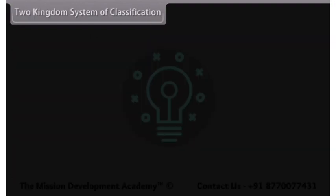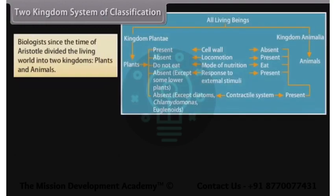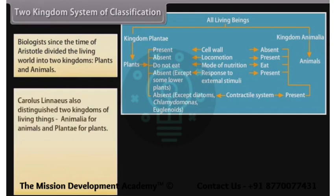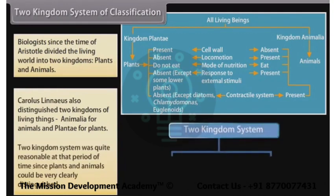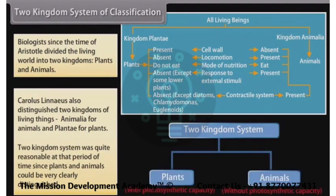In the Two Kingdoms System of Classification, biologists since the time of Aristotle divided the living world into two kingdoms: Plants and Animals. Carolus Linnaeus also distinguished two kingdoms of living things — Animalia for animals and Plantae for plants. This two kingdoms system was quite reasonable at that period of time, since plants and animals could be very clearly distinguished.